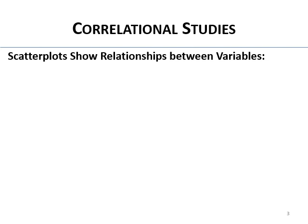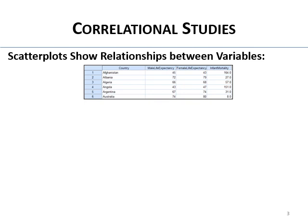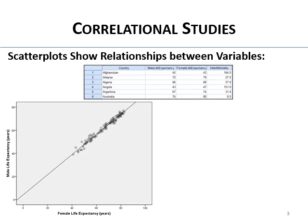Let's talk about scatterplots — visual ways to show relationships between variables. Here we have various countries with male life expectancy on the y-axis and female life expectancy on the x-axis. You can see that countries with higher male life expectancy also tend to have higher female life expectancy. The opposite is also true: countries with lower male life expectancy tend to have lower female life expectancy.